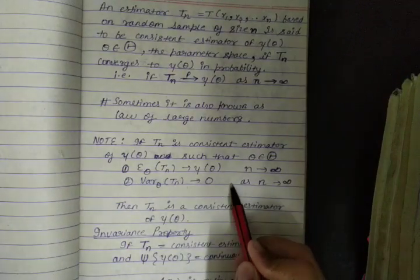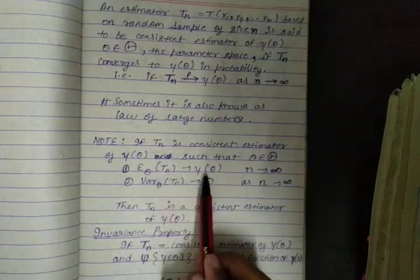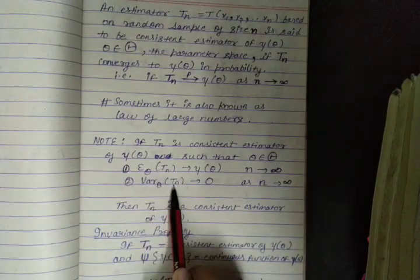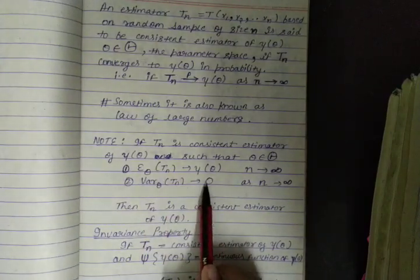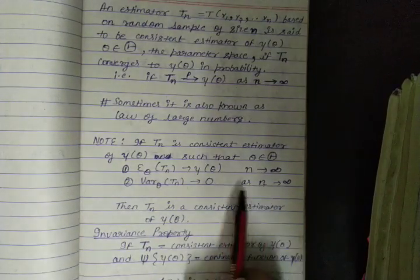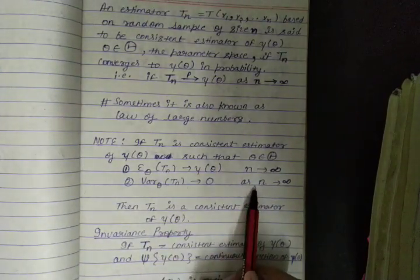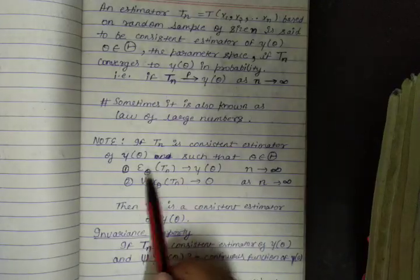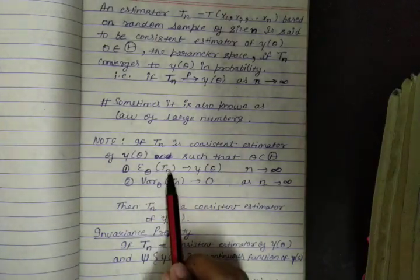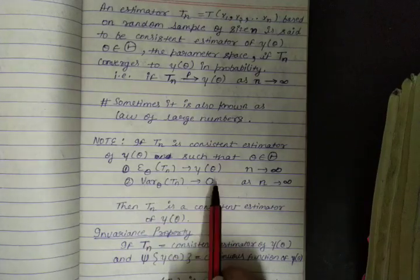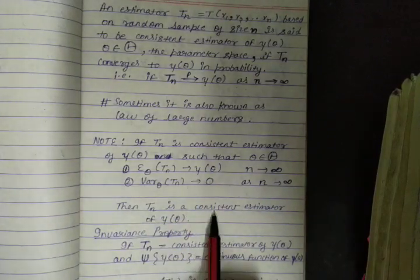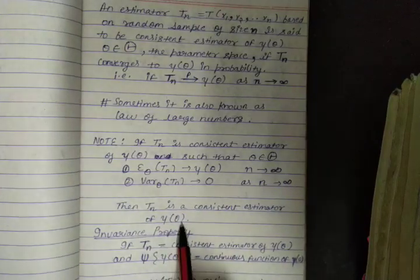If these two conditions are satisfied — that you are getting some value for E of Tn converging to gamma theta, and for variance of Tn you are getting value as 0 as n tends to infinity — then only you can say that Tn is a consistent estimator of gamma theta.